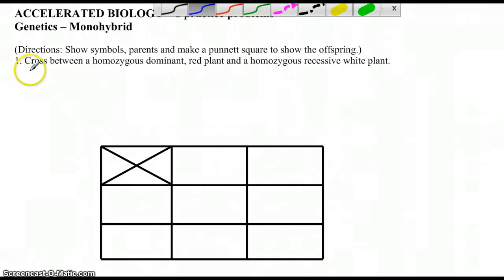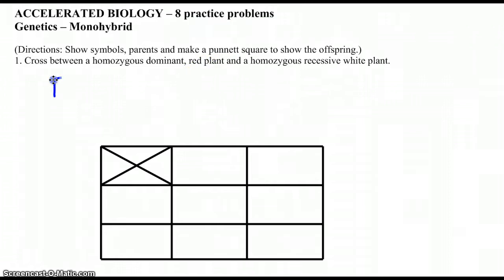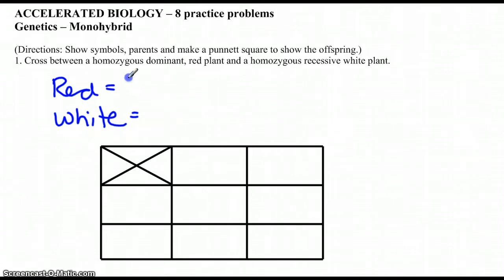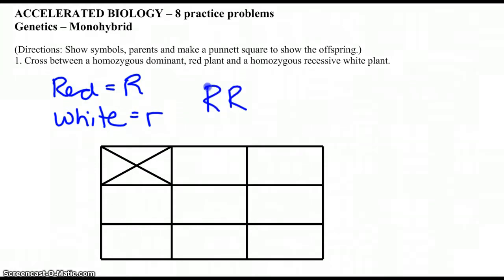The first problem is a cross between a homozygous dominant red plant and a white plant — those are our contrasting traits for plant color. We need to figure out which is dominant and which is recessive. It tells us right here that red is dominant. I'll use the letter R — capital R for red (dominant) and lowercase r for white. Our first parent is homozygous dominant red, so capital R, capital R, crossed with homozygous recessive white, which is two lowercase r's.